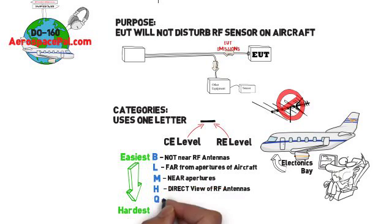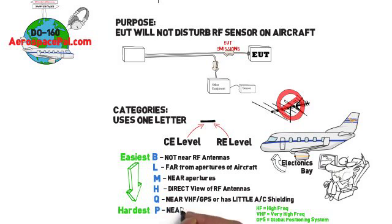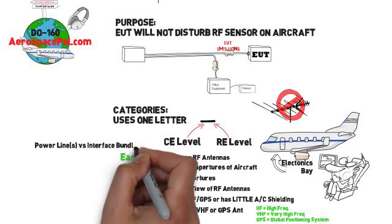Q - equipment and associated wiring that may be near VHF or GPS radio receiver antennas or has little aircraft structure shielding. And finally, P - equipment and associated wiring near HF, VHF, or GPS radio receiver antennas.